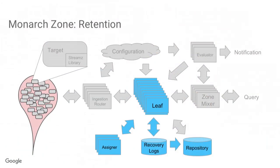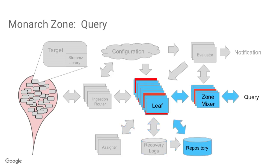Data is retained in recovery logs, and an assigner constantly does load balancing. When scaling horizontally by bringing up more nodes, you want memory usage and CPU usage per backend to be roughly constant. The assigner moves things around using recovery logs and provides a path to the repository. For queries, a zone mixer examines the query, decides which leaves have the data, sends the query to those leaves, and the leaves combine data from their in-memory store and on-disk repository. They do some aggregation and send intermediate results back, and the zone mixer aggregates those intermediate results — distributing computation over many CPUs for complex queries.